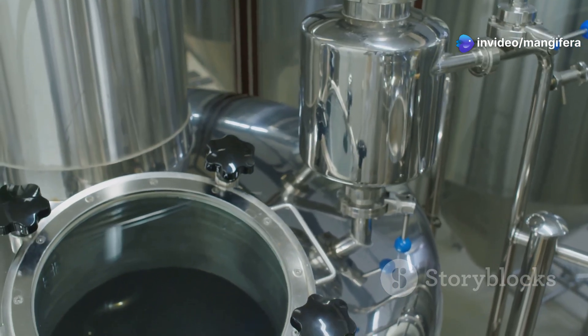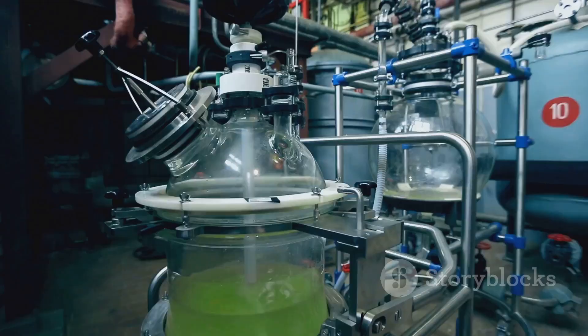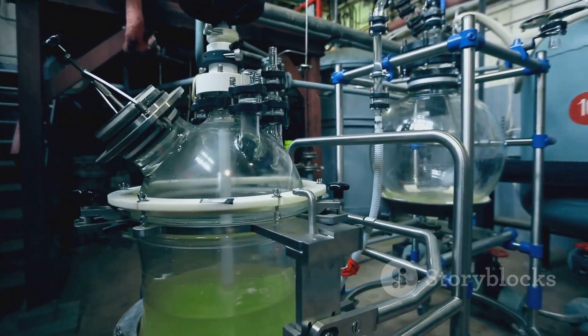The column is packed with materials to increase surface area, allowing better contact between liquid and vapor phases. This helps in achieving a more efficient separation.